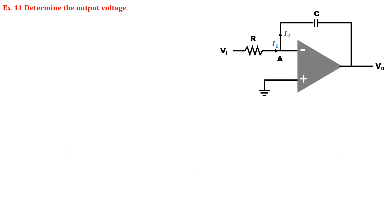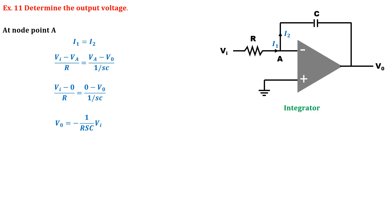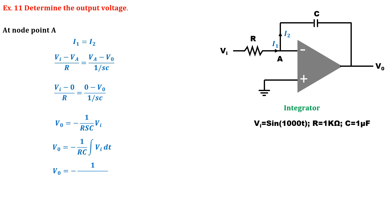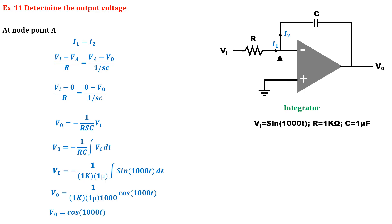In this operational amplifier circuit diagram, the capacitor and feedback resistance have been swapped compared to the differentiator. Such an operational amplifier is called an integrator operational amplifier. Again at node point A, I1 equals I2. I1 is Vi minus Va upon R, and I2 is Va minus Vo upon 1/(SC). Solving gives the output voltage as –Vi/(RSC). To convert from frequency domain to time domain, replace 1/S with integration, giving Vo = –(1/RC)·∫Vi dt. If the input voltage is sin(1000t), the output is cos(1000t), which is the integration of sin. Mathematically the integral of sin(t) is –cos(t), but due to the additional negative from the inverting terminal, the two negatives cancel, giving a positive cos(1000t).